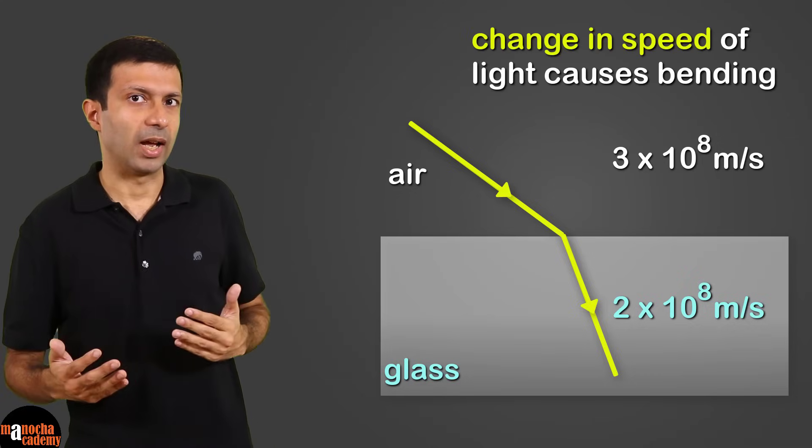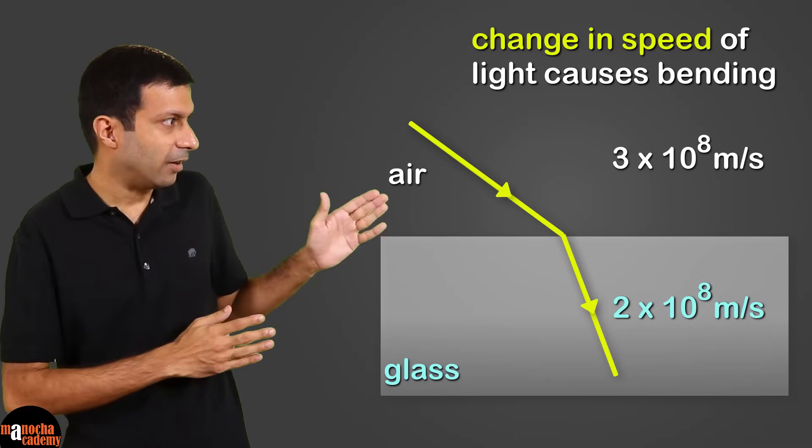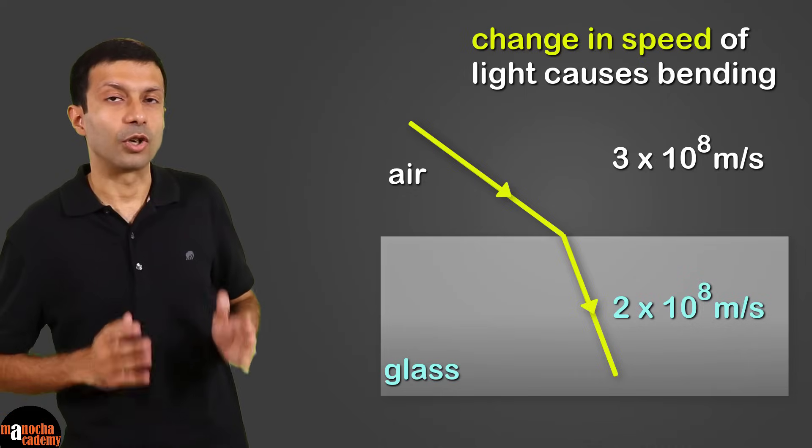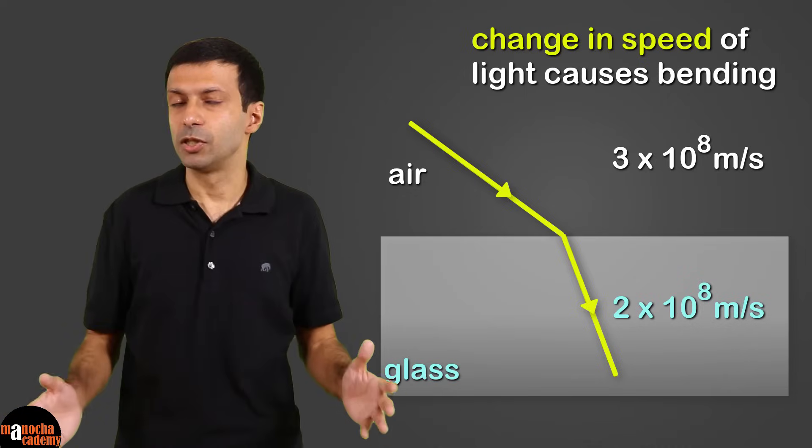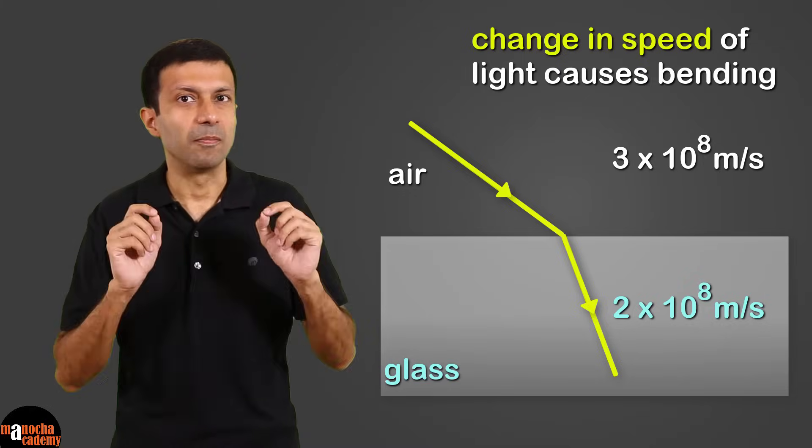So this change in speed of light when it's traveling from air to glass causes the light to bend. And greater the change in speed, greater will be the bending of light.